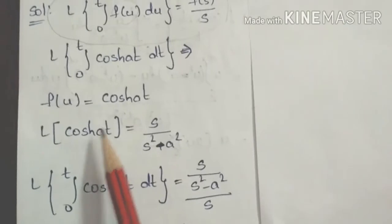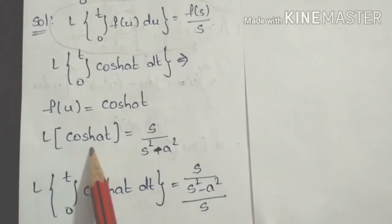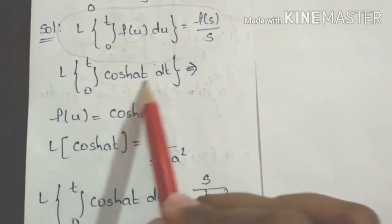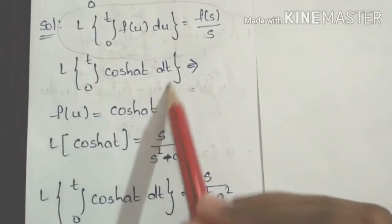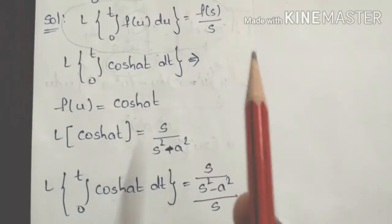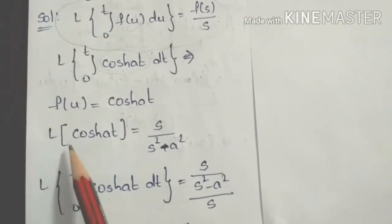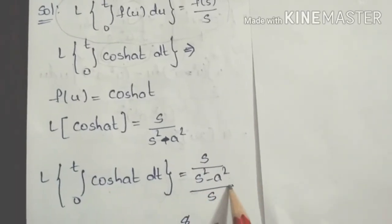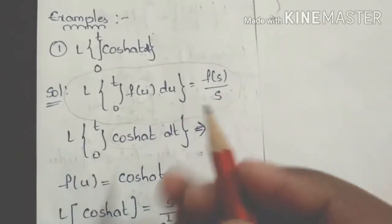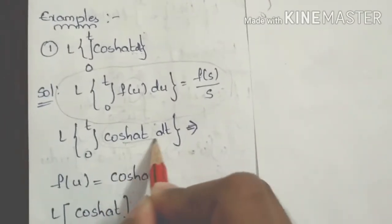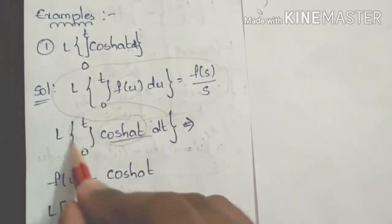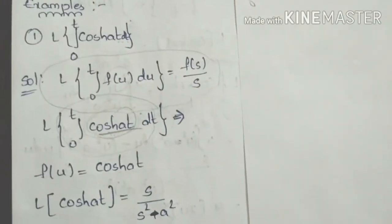Therefore, the Laplace transform of the integral from 0 to t of cosh(at) dt equals F(s)/s, where F(s) = s/(s² - a²). Dividing by s gives s/(s² - a²) divided by s, which simplifies to 1/(s² - a²). Problem solved. The key steps: identify f(t), find F(s) via Laplace, then divide by s.